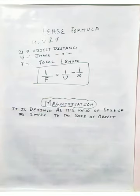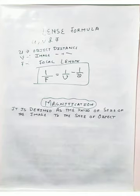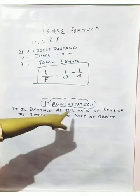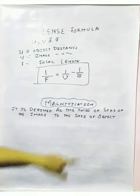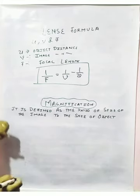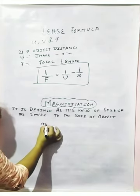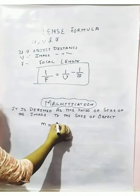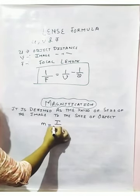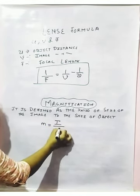Now we are going to talk about magnification. Magnification tells us how enlarged or how small the image will be after it is formed by the lens. It is defined as the ratio of the size of the image to the size of the object, denoted by M, and represented as height of the image to the height of the object.